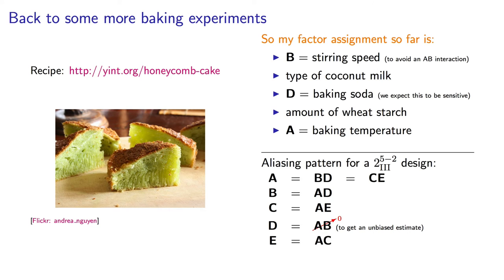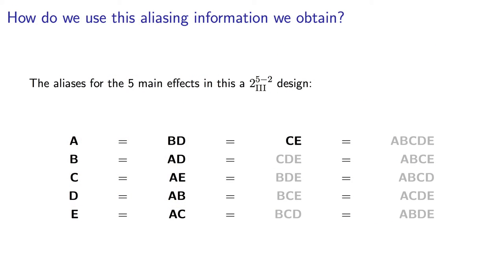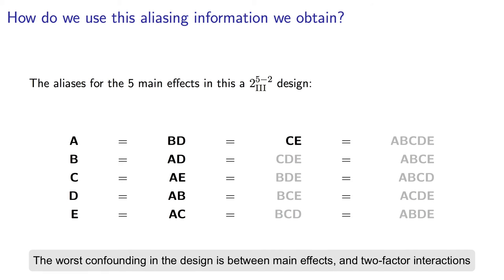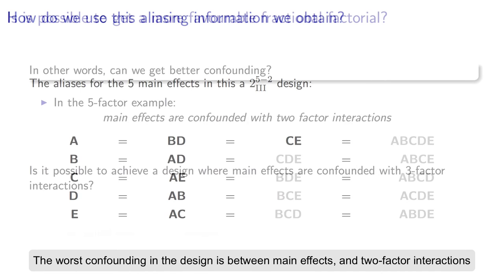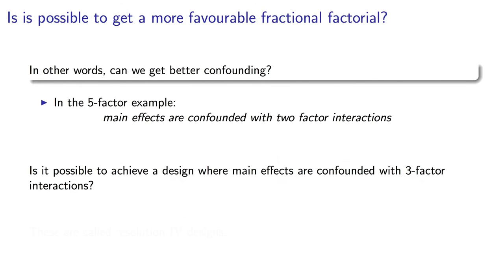One final item I'd like to draw your attention to is to notice that main effects are aliased with two-factor interactions in this example. We call that the resolution of the design. Resolution gives me an idea of the level of confounding in the design. And I'm going to talk more about that in a minute.